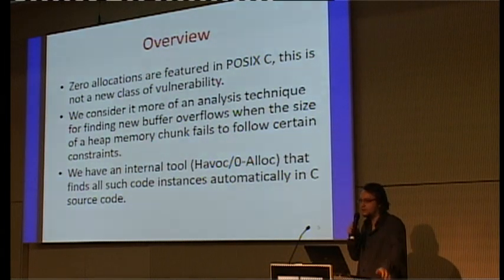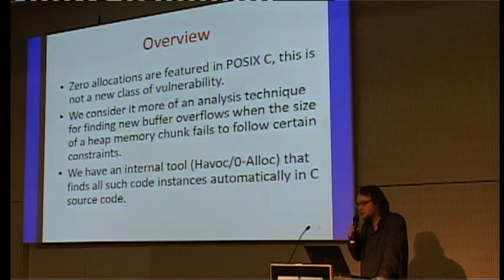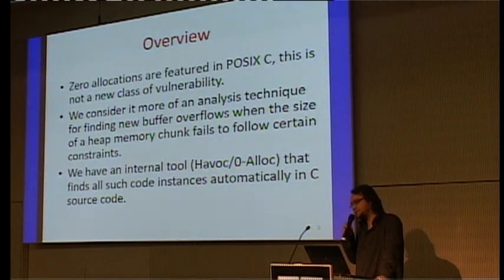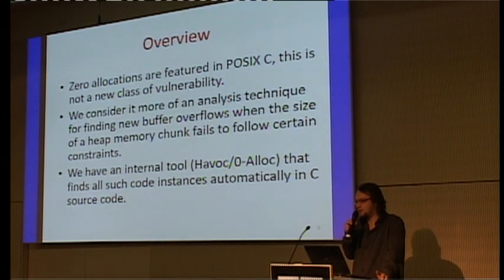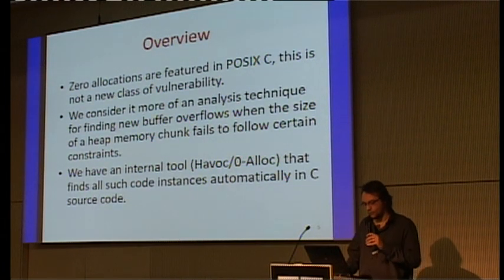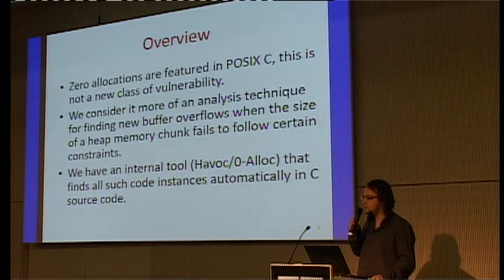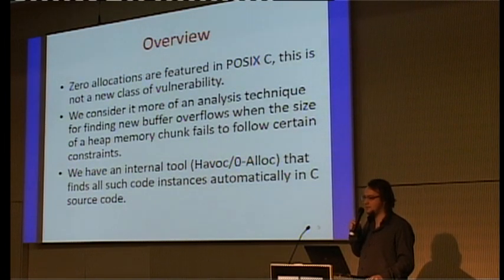At Microsoft we do lots of analysis: static analysis, fuzz testing, and code review. We have a small internal tool based on a theorem prover that allows us to uncover all those locations in the Windows kernel and any code base. That allows us to filter the code review we have to do across many millions of lines of code, giving higher assurance of the absence of such bugs. The tool works mostly for C programs, from source code, though binary-level analysis is also possible.